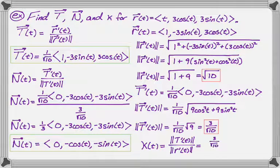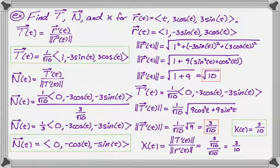So three over root 10 over root 10, which is just three over 10. So we have found that the curvature is a constant value. It's always three over 10. And that's because this curve is very circular, so it has a constant curvature as you go around it.